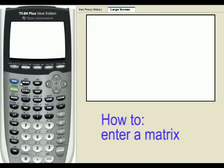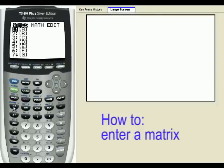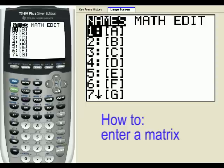To enter a matrix, you go to the second key in the upper left hand corner of the keyboard, press it once, and then press the key with the X to the negative one. It has the word matrix right above it. This brings us to the matrix menu.